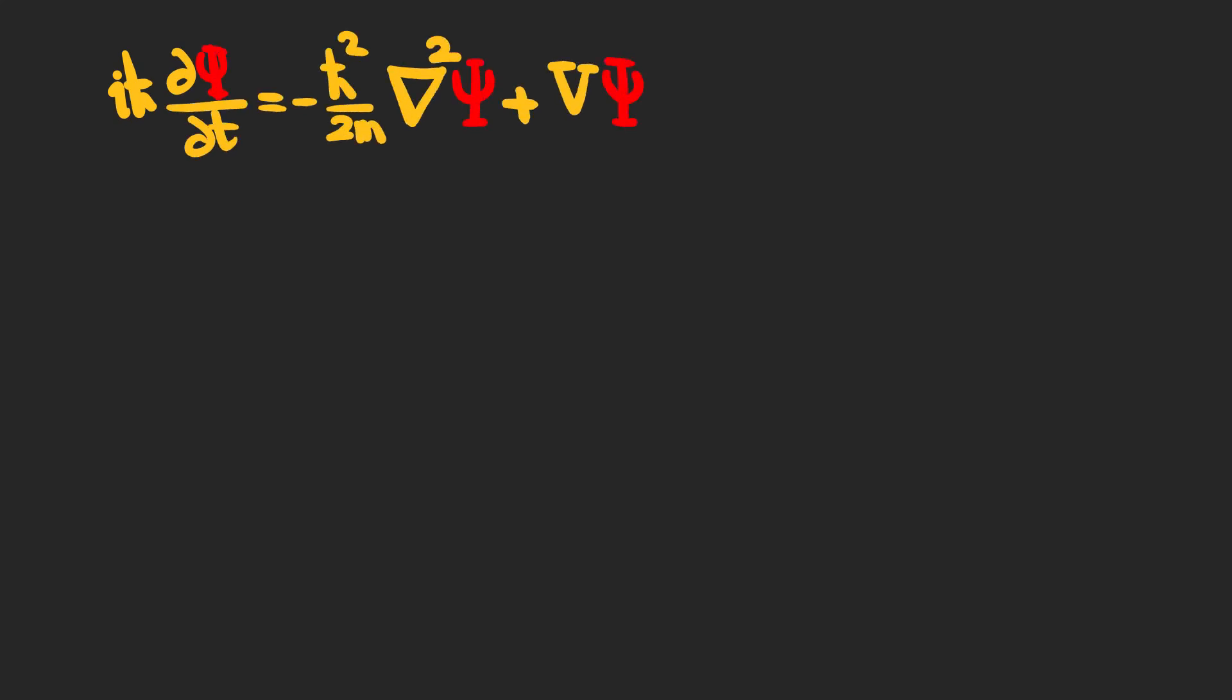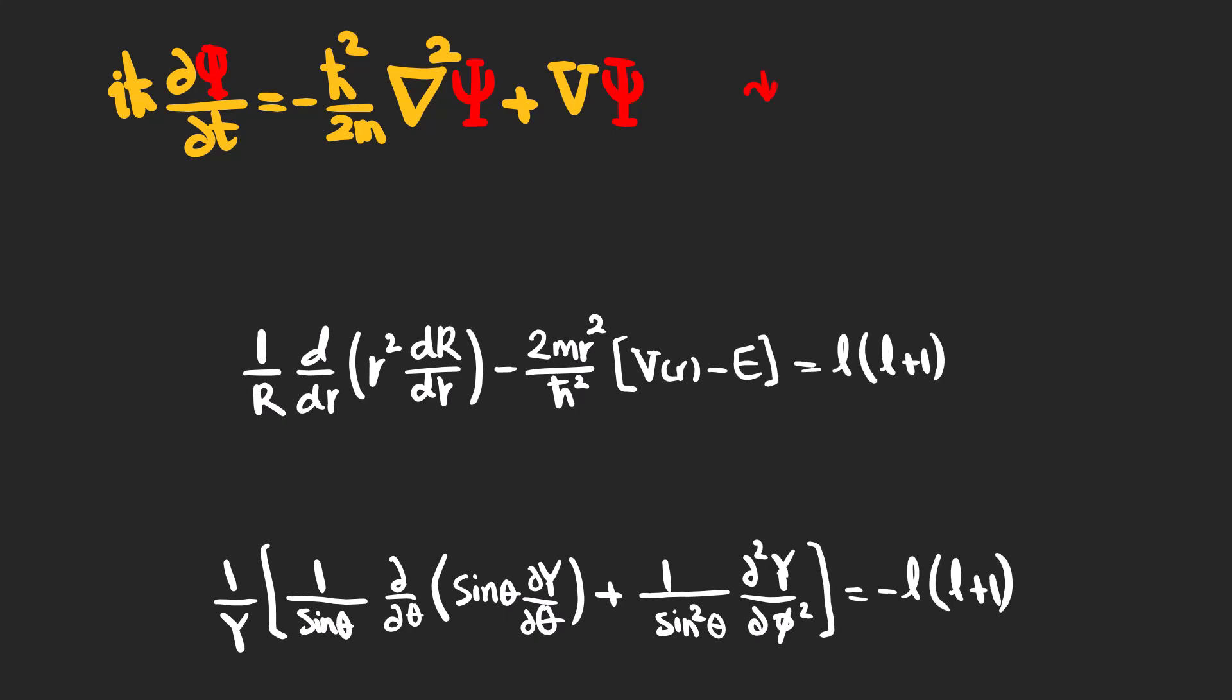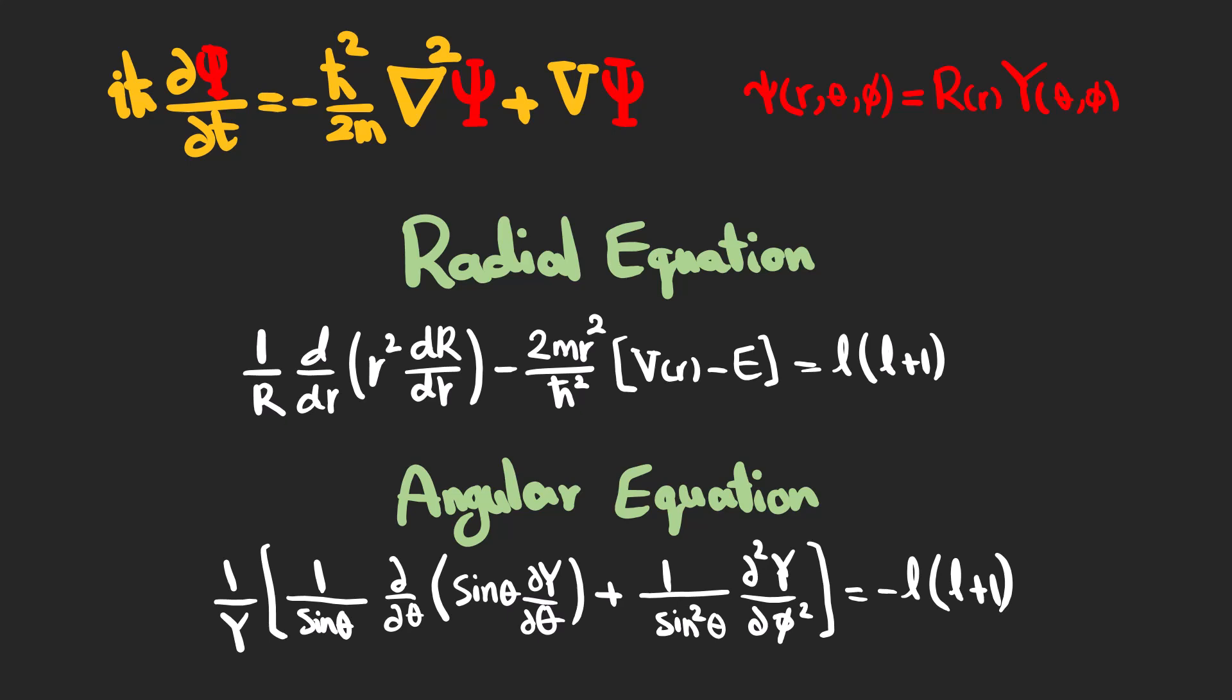This is the Schrödinger equation in three dimensions and we can separate it into two equations using this expression which consists of a radial part depending only on distance from the center and also an angular part which depends on the two angular variables theta and phi.